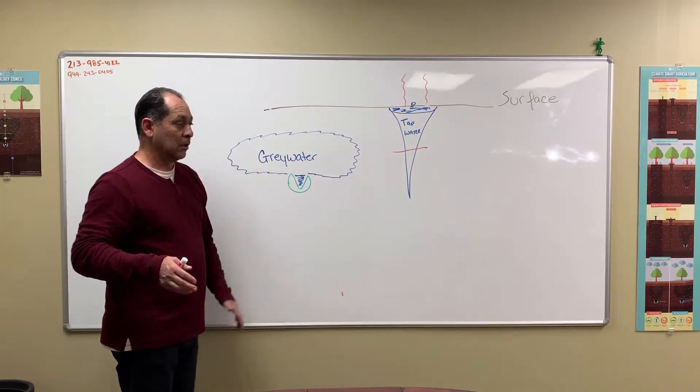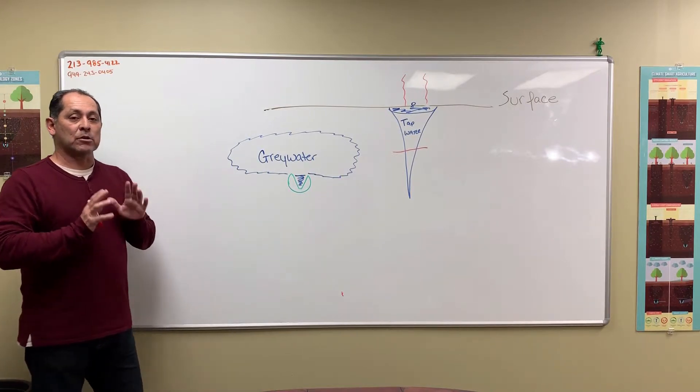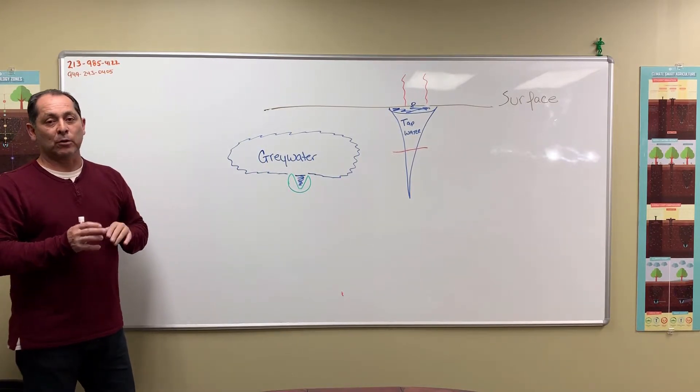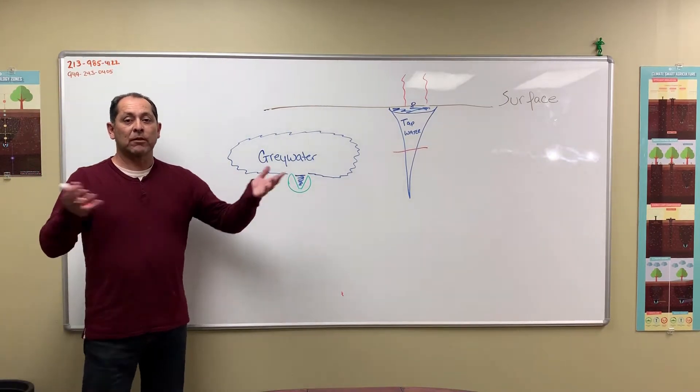Now with gray water, this is zero potable water. This is water that you've already used in your shower or your laundry, and you're reusing it for your landscape, so automatically you're saving that much water.